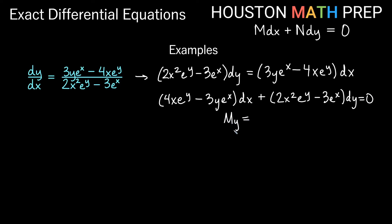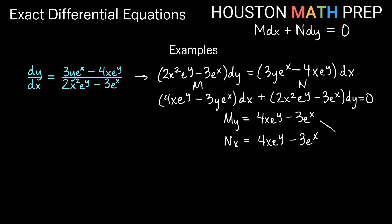Checking exactness: for partial M with respect to y, the derivative of 4xe^y with respect to y keeps e^y and the constant multiple, giving 4xe^y. The derivative of −3ye^x with respect to y treats −3e^x as a constant multiple, so the y drops off giving −3e^x. So ∂M/∂y = 4xe^y − 3e^x. For partial N with respect to x, the derivative of 2x²e^y with respect to x gives 4xe^y, and the derivative of −3e^x with respect to x gives −3e^x. These are equal, so ∂M/∂y = ∂N/∂x, confirming this equation is exact.